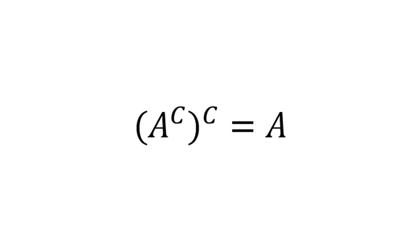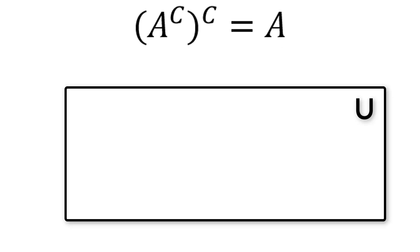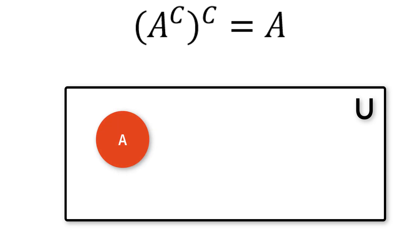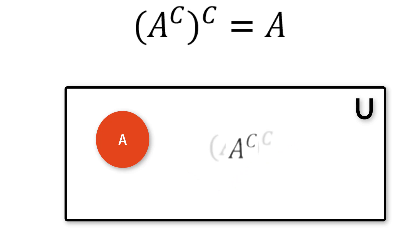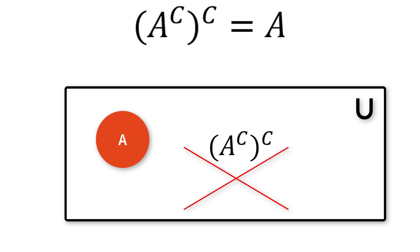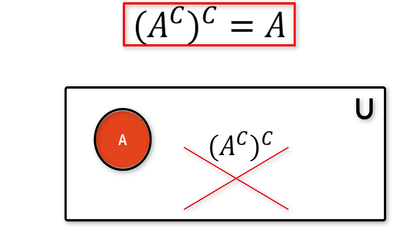The next property is: the complement of complement of A is A. Using the Venn diagram — this is the universal set and this is A. Without any doubt, the rest of the elements are A complement, so this section is A complement. Now, if we take the complement of A complement, we get the elements which are NOT in A complement, which are the elements in A. This is why the complement of complement of A is A itself.